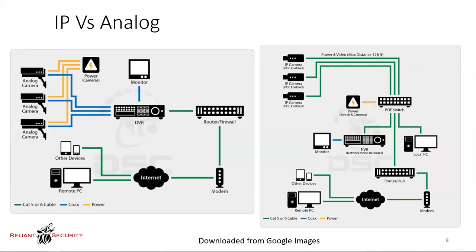This diagram shows an analog camera system on the left — you see power to the cameras and blue lines for the video feed going into the DVR, which then goes into a router or firewall appliance. On the right, all the green lines represent a single cable type: cat five or cat six, running the IP camera system. There is a maximum distance of 328 feet for any category five cabling — use 300 feet as a general rule of thumb. That's 100 meters.